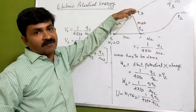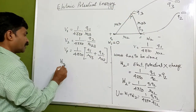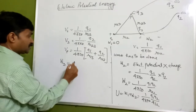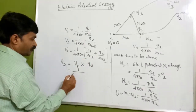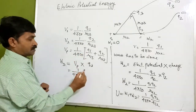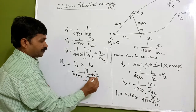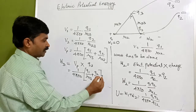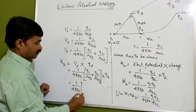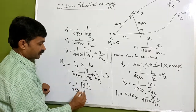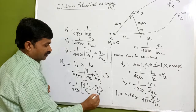Work has to be done to bring q3 to this point. The work done W3 = Vp × q3 = (1/4πε₀) × (q1/r13 + q2/r23) × q3, which gives W3 = (1/4πε₀) × (q1q3/r13 + q2q3/r23).